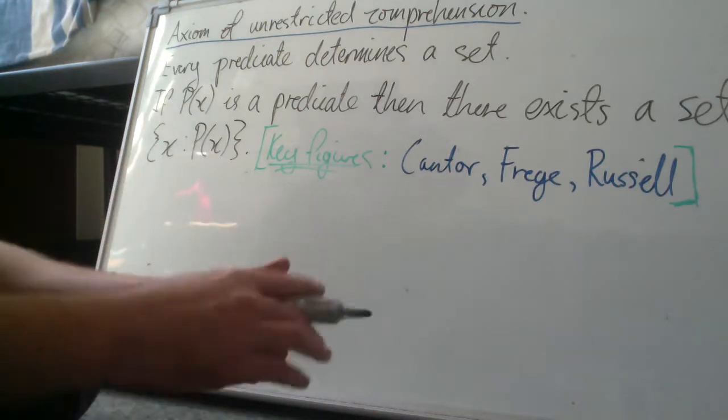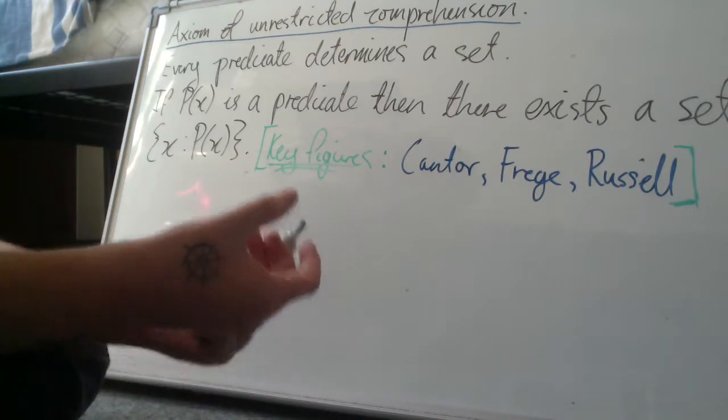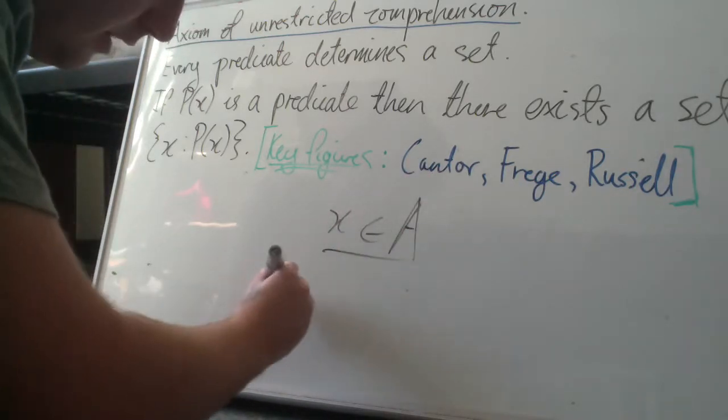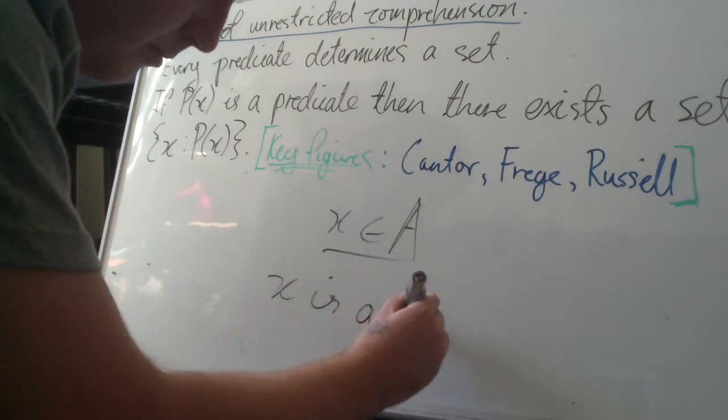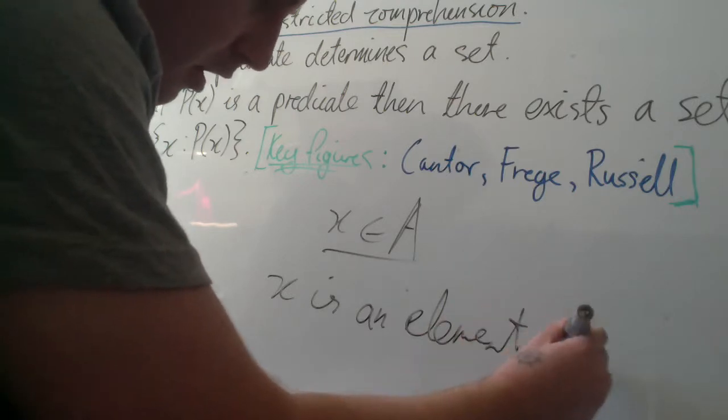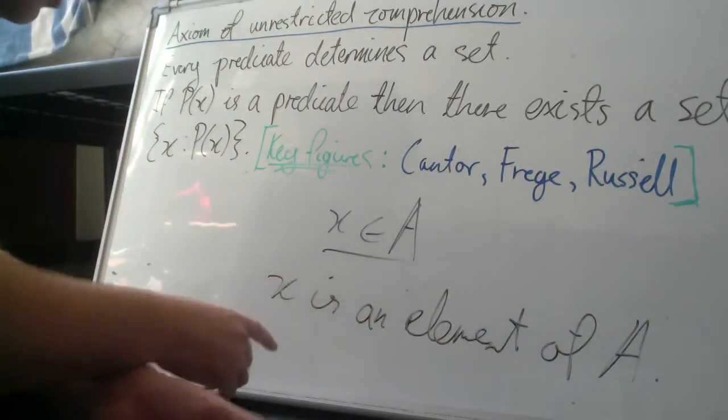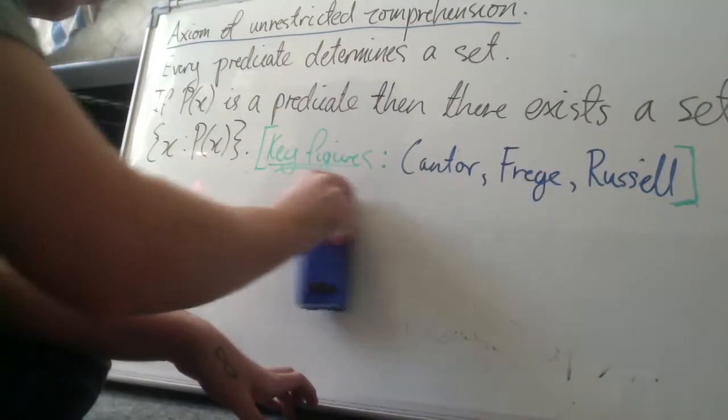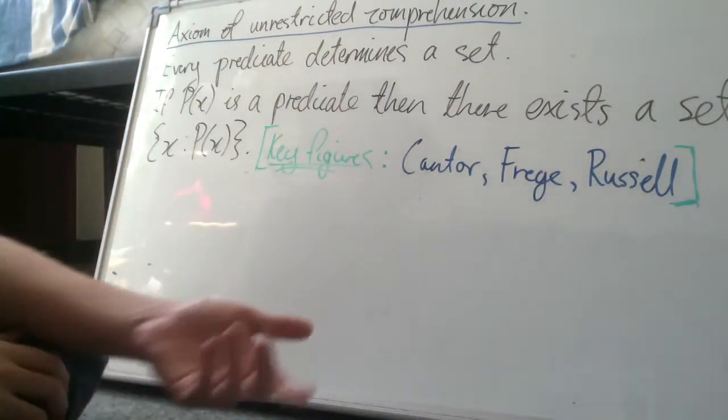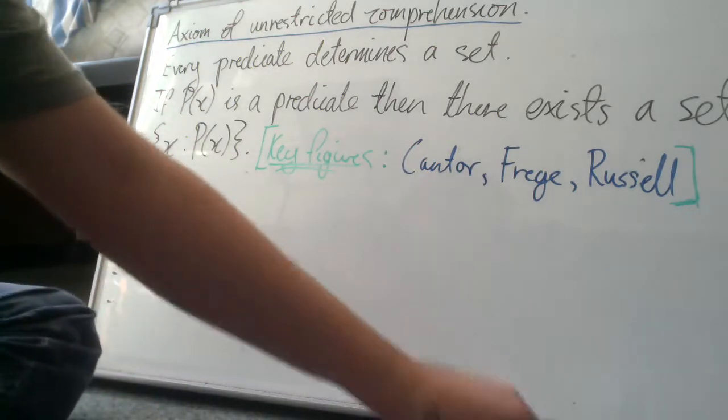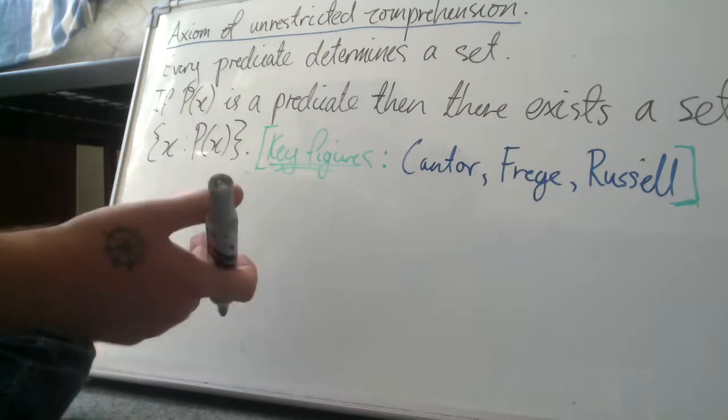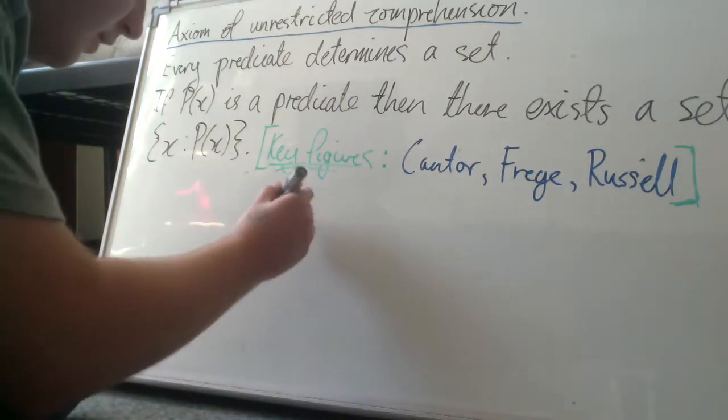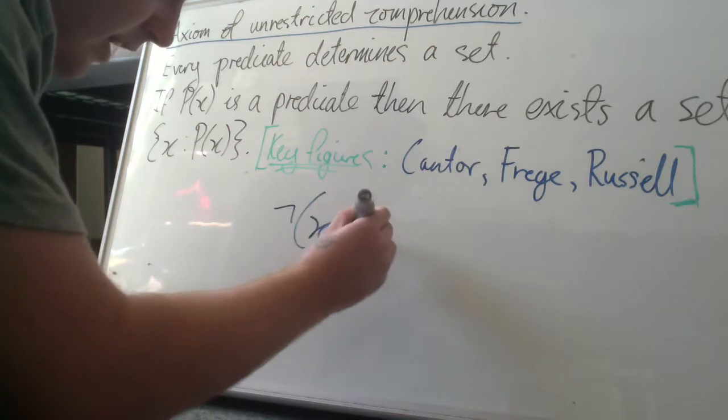The basic concept in set theory is membership. So we write x element A to say that x is an element of A, or equivalently x is a member of A, or the other way around, A contains x. So the predicate which we're going to use to find a contradiction is, essentially we just use negation and the membership relation. So we say not x element x.